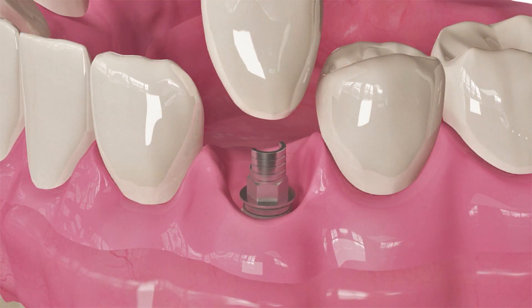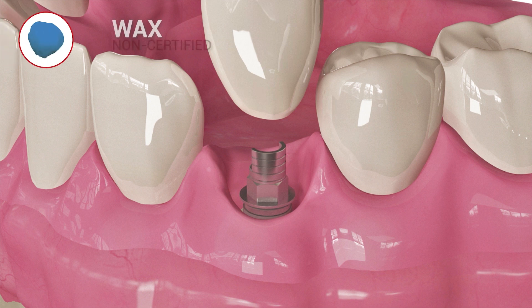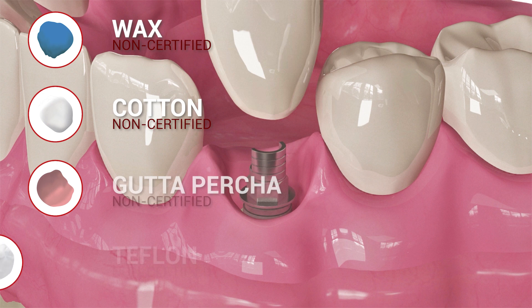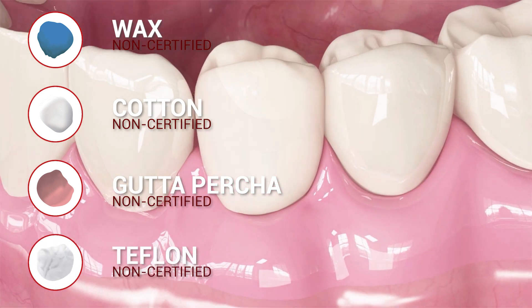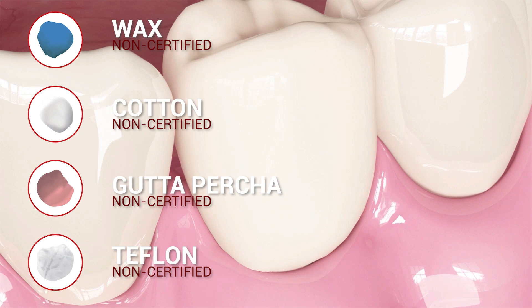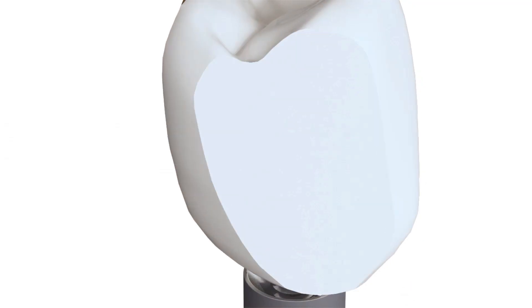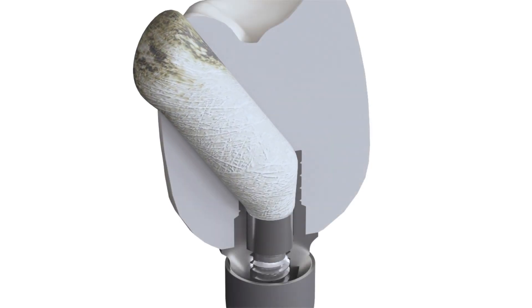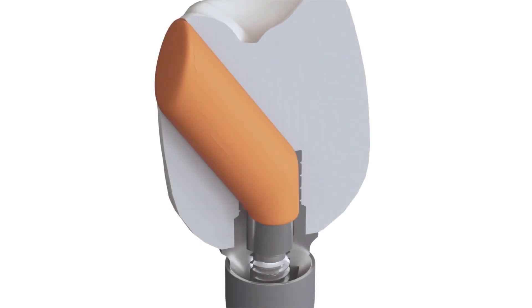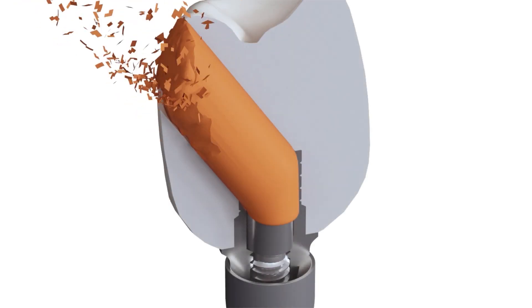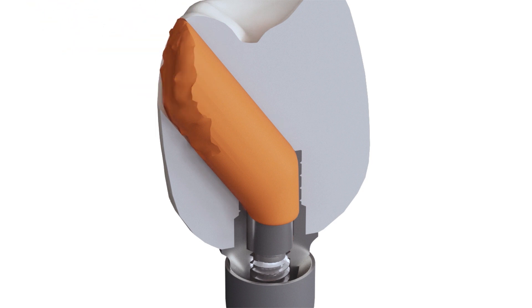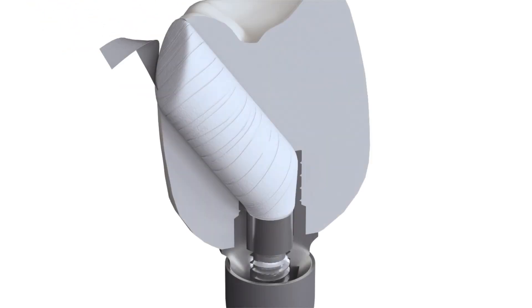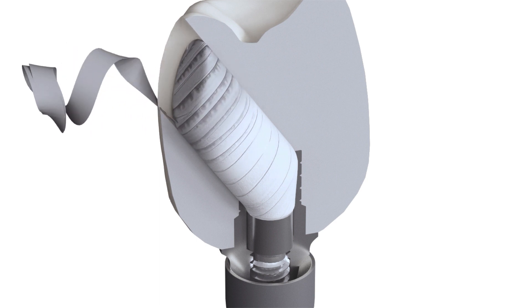Until today, dentists were using any sort of materials to fill the screw tunnel of the abutment, such as wax, cotton pellets, gutta percha, teflon plumber tape — and this is only a partial list. Wax is an unstable material that might dissolve. Cotton promotes bacterial growth. Gutta percha or composite can present a challenge when maintenance is required, as they are difficult to remove. Teflon is proven to be susceptible to leakage and can also accumulate bacteria.